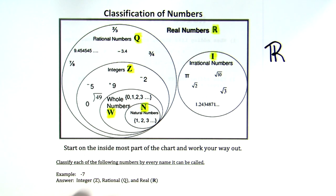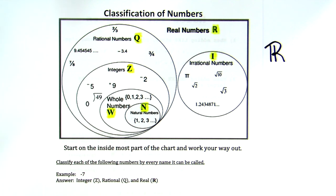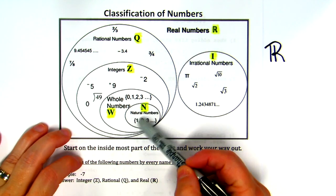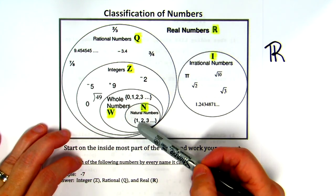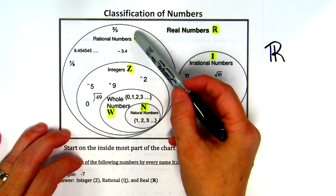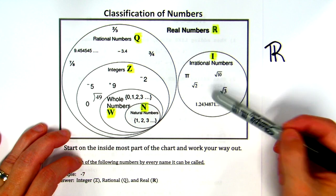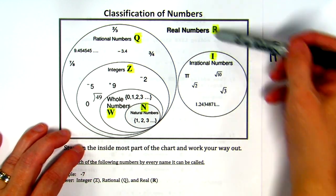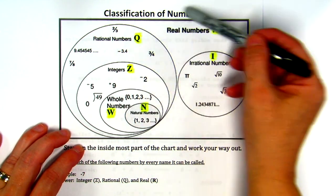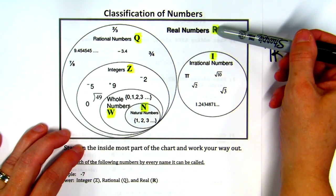As a check for understanding: where do we start in the chart? You start on the inside — the farthest innermost part — and work your way out. If you go all the way out on one side and can't find the number, you come to the other side. That side also has an inside portion and you work your way out from there. That's how you use the chart to classify numbers.